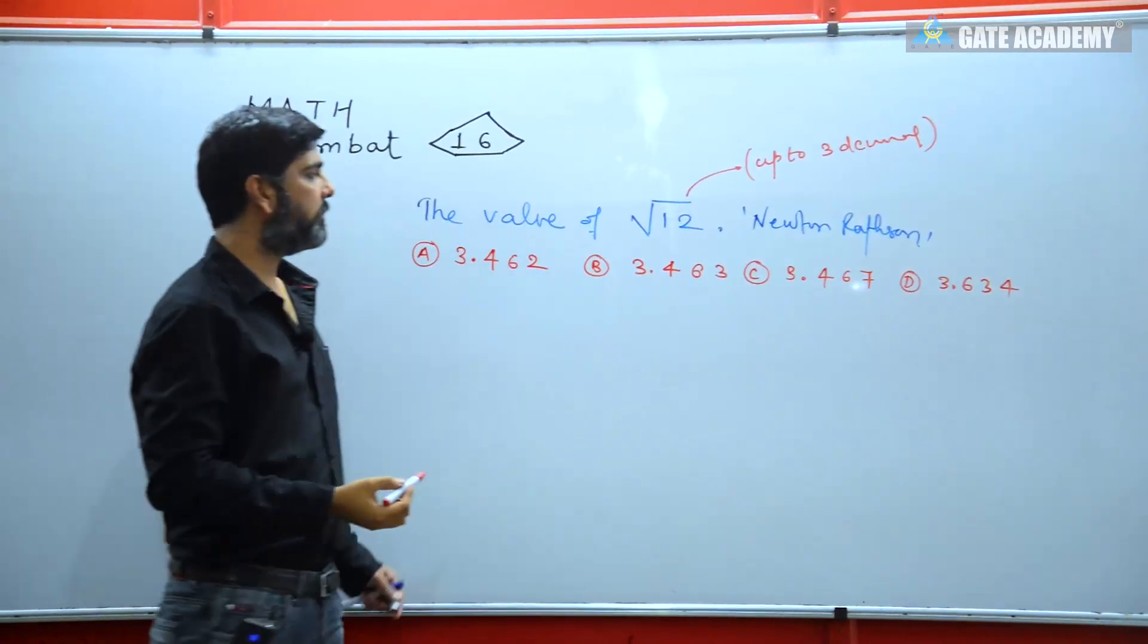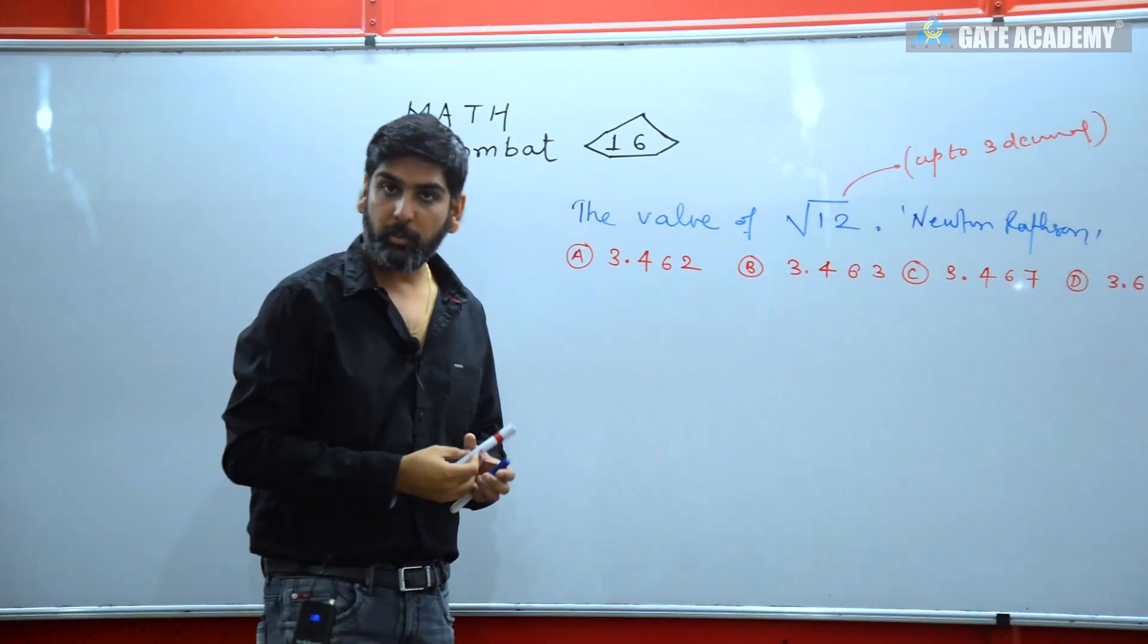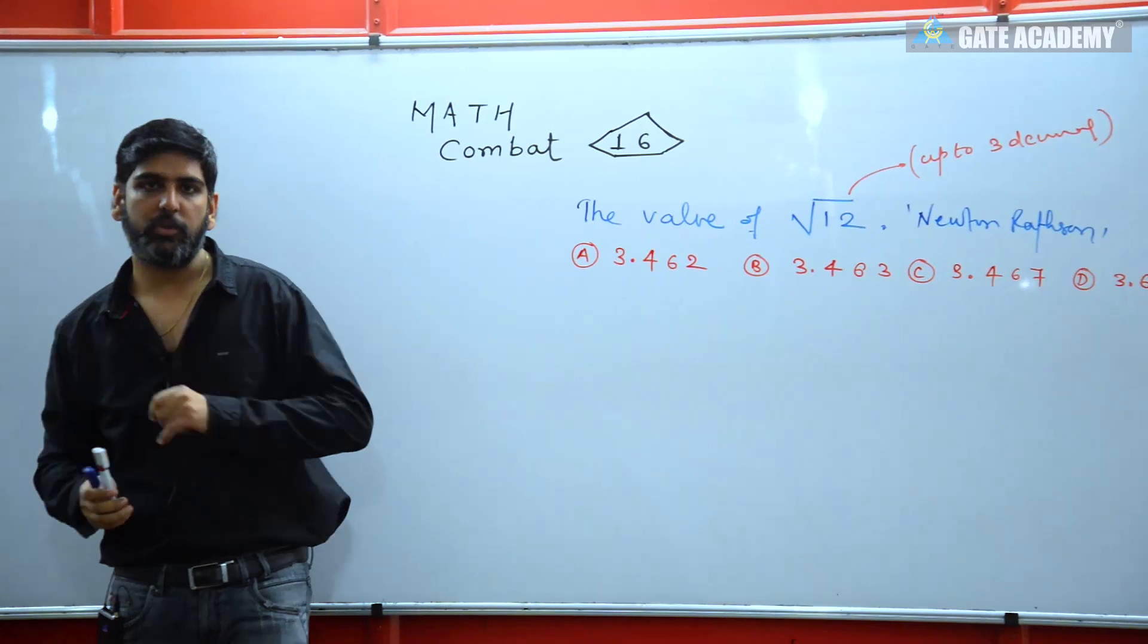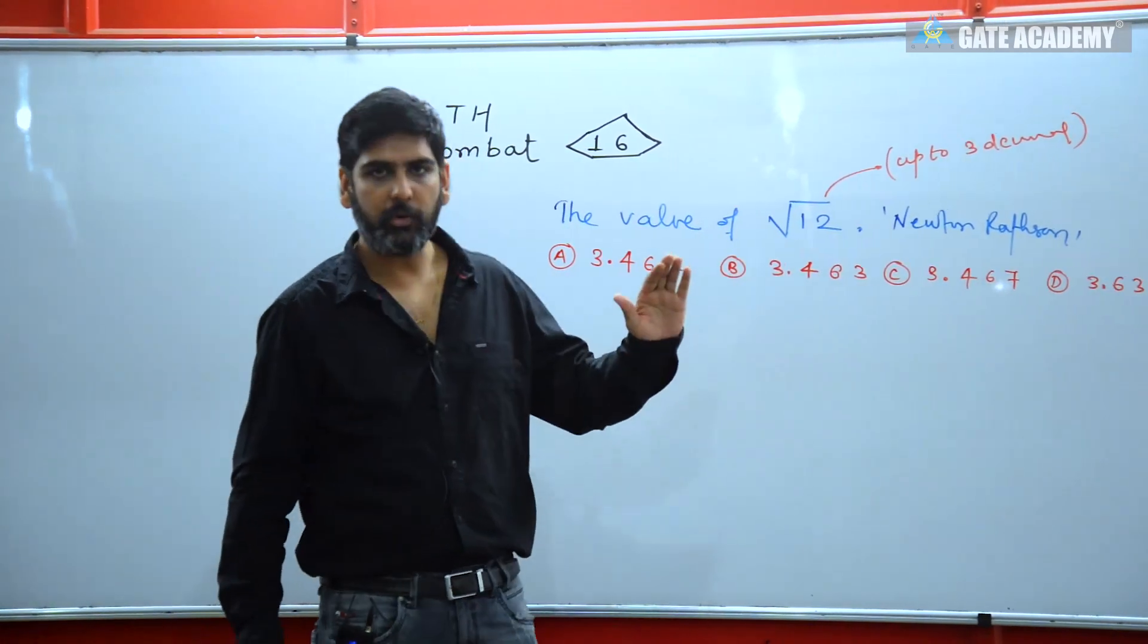So we have these four options. You have to calculate the value of under root 12 using Newton-Raphson's method. Now when I give the solution, you will see it. I will introduce Newton-Raphson's method.